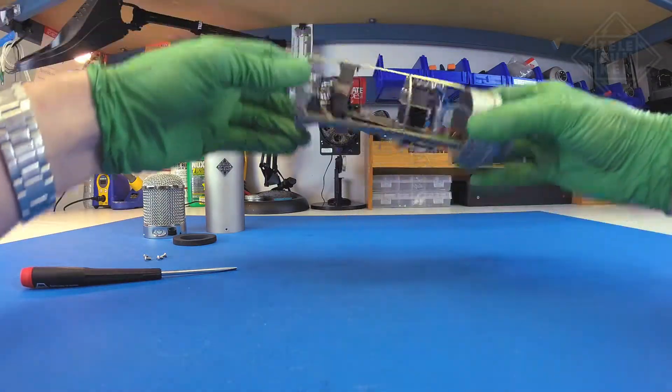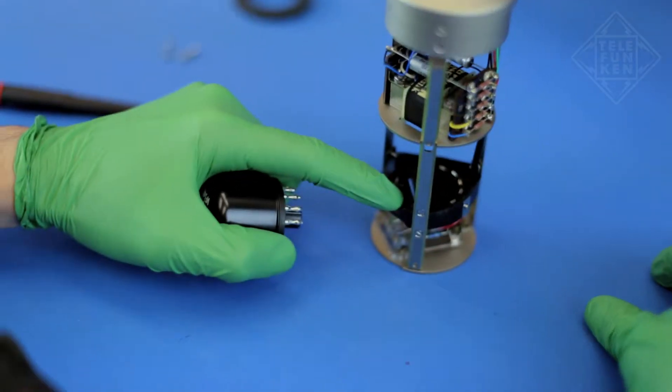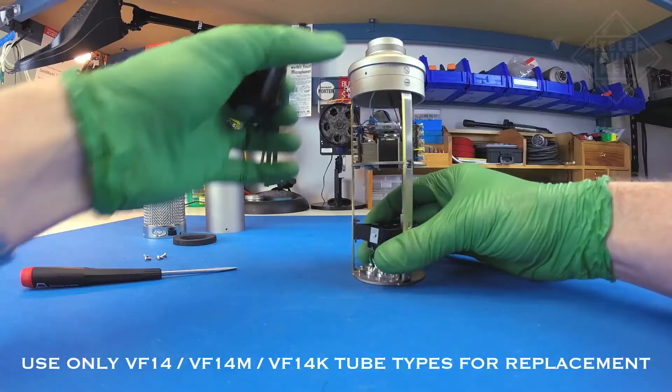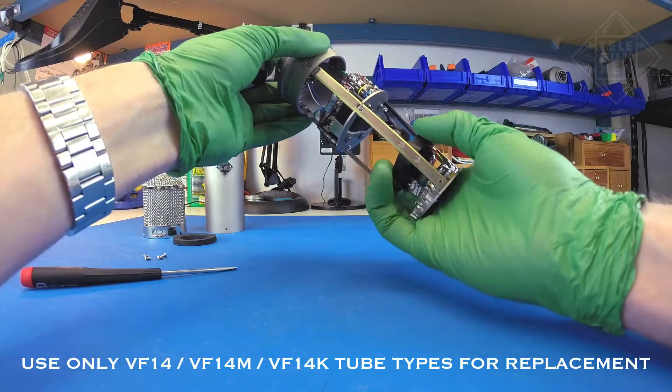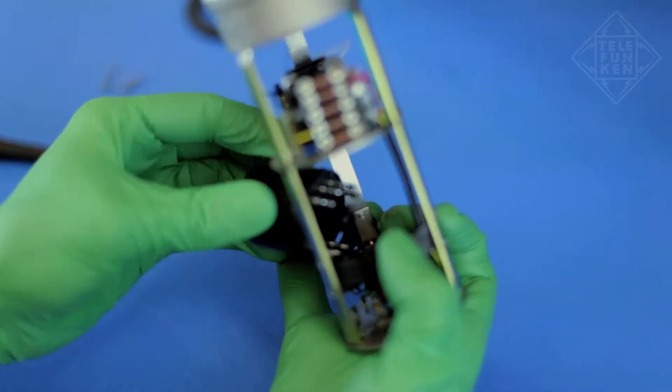Flip the microphone upside down and locate the three consecutive tube socket holes. Now locate the three consecutive pins on the tube. Pull down on the tube socket with one hand while inserting the new tube into the socket at an angle.